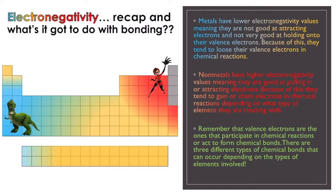Non-metals, on the other side of the periodic table, have higher electronegativity values, meaning that they're good at pulling electrons in or attracting electrons towards themselves. Atoms that are good at attracting electrons are already going to be really good at holding on to their own valence electrons, so they're not going to want to let them go. Because of this, these atoms tend to gain or share electrons in chemical reactions depending on what type of element they're reacting with.